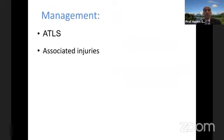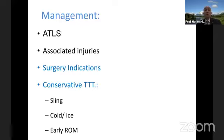When thinking about management, because of associated injuries you think about ATLS. Consider the associated injuries — cervical spine is most important, breathing, lungs, and tube intubation may be more urgent. There are surgical indications which we will mention. For conservative treatment, it's simple: sling, cold, and passive range of motion early, then active-assisted at three to four weeks, followed by active motion by six weeks when the fracture heals.